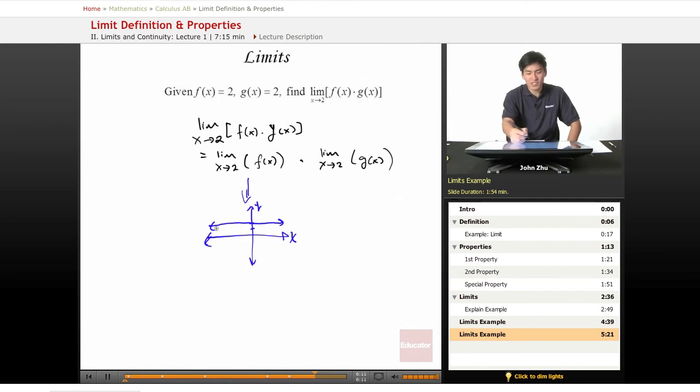So then the limit as x approaches 2, or x approaches anything, is going to be 2. So limit as x approaches 2 of f(x) equals 2.